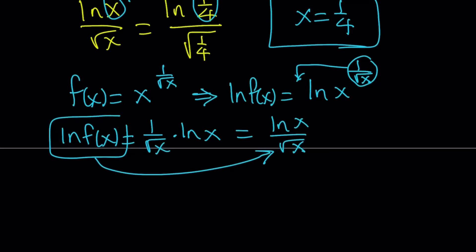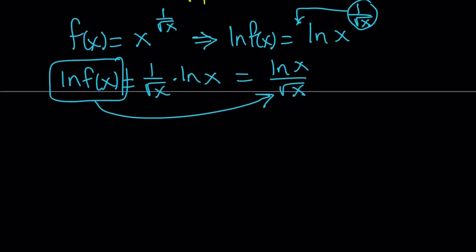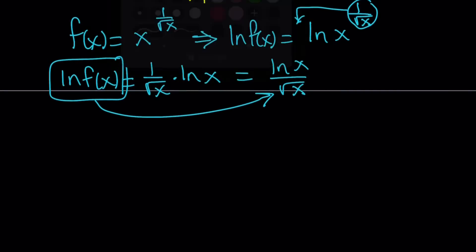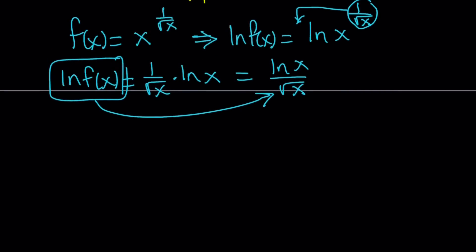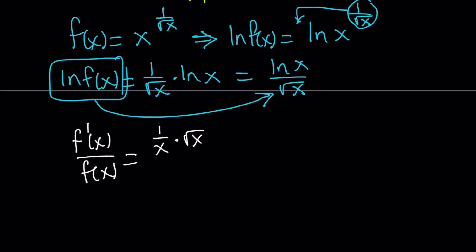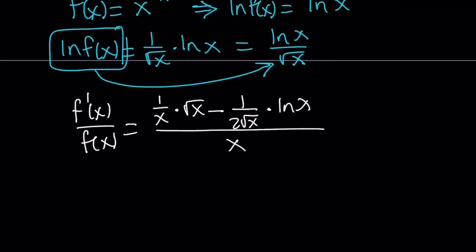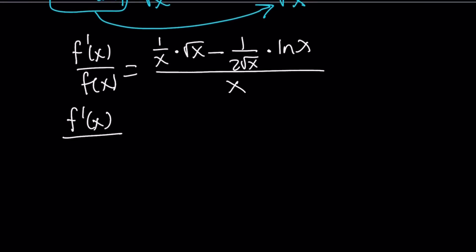I'd like to differentiate both sides. How do you differentiate ln of a function? We must use the chain rule. If you have ln of something — we often use u — then it's u prime divided by u. So the left side gives f prime divided by f. The right-hand side uses the quotient rule: the derivative of ln x times square root of x, minus the derivative of square root of x times ln x — that's u prime v minus v prime u — divided by v squared, which is just x since the square root of x squared equals x.